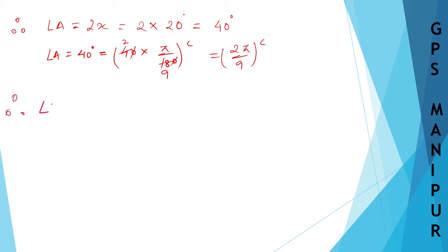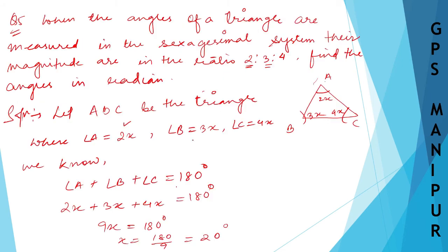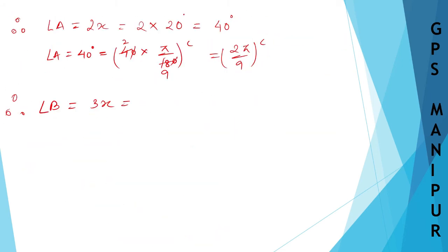Angle B is 3x, which will be equal to 3 into 20, which is 60 degrees. Angle B is equal to 60 degrees.